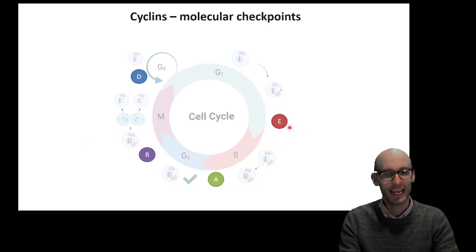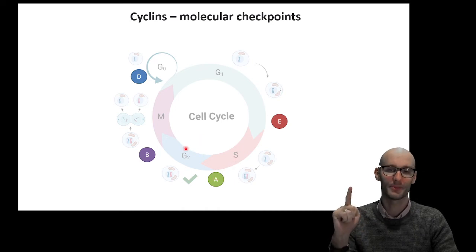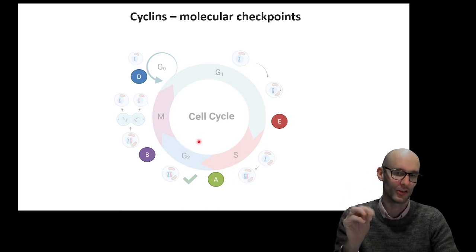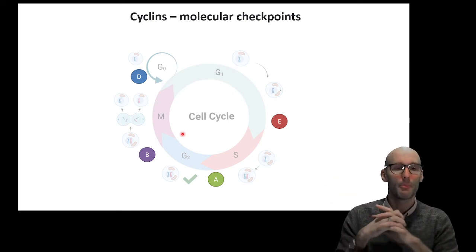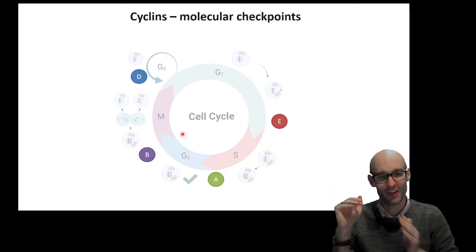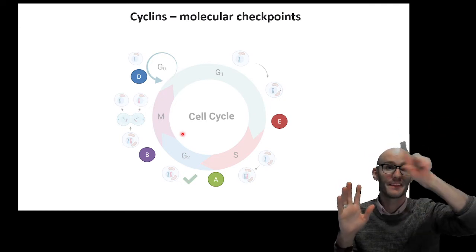Then there's more molecular switches. E gets turned on to go from the G1 to the S phase. A gets turned on to go from the S to the G2 phase. B gets turned on to go from the G2 to the M phase. Don't learn those letters, but it is interesting to know that there's just sort of a cyclin, which is a checkpoint for each of the phases going around the cell cycle.